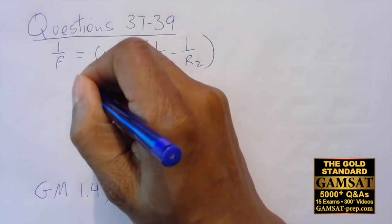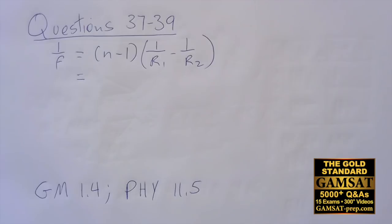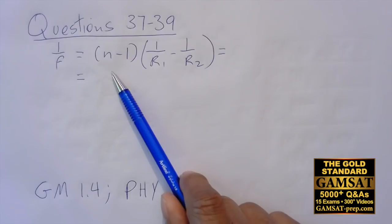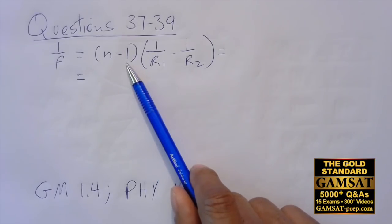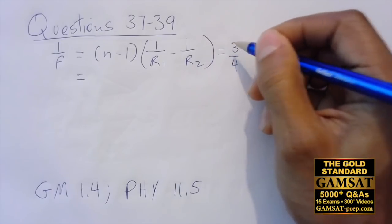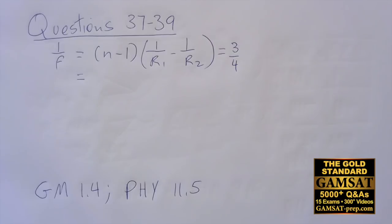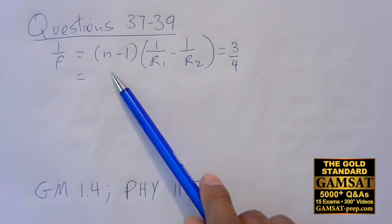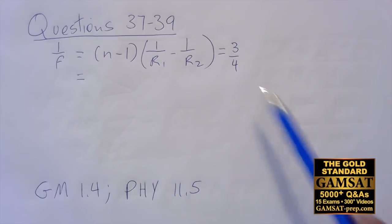We have 1 over f. We have n minus 1, so n is 1.75, so 1.75 minus 1 is 0.75, which is three quarters. I don't like to work with decimals because decimals will lead you into doing more complex calculations. Fractions can simplify and so it's far better to work with fractions. They did that on purpose to have it such that 1.75 minus 1 would make an easy fraction to be able to work with.